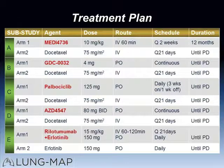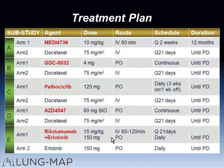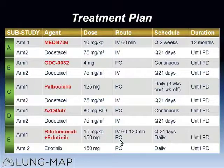Here is an all-inclusive table of how the treatment will be administered for each arm. All investigational therapies are oral, except for the anti-PD-L1 arm where treatment is given intravenously every two weeks, and the combination of rilatumumab, an anti-HGF monoclonal antibody, given intravenously every 21 days in combination with oral erlotinib. Docetaxel is uniformly our standard of care arm for all targeted comparisons.